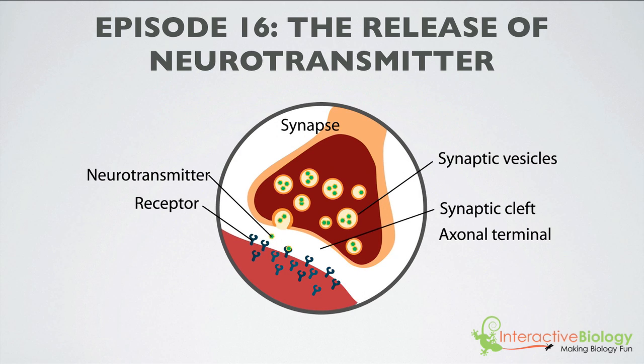So we're looking at that connection, and there are a few terms that you need to understand. The connection between neurons, we call that the synapse. The synapse is the connection between one neuron and another neuron, or between one neuron and another cell, organ, or gland. We are basically talking about the place where neurons connect with other cells.